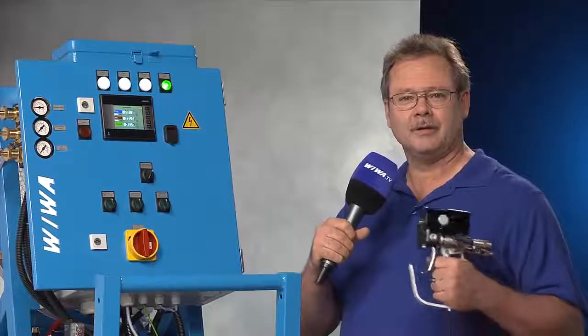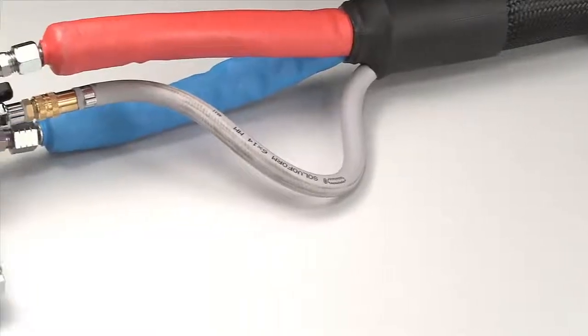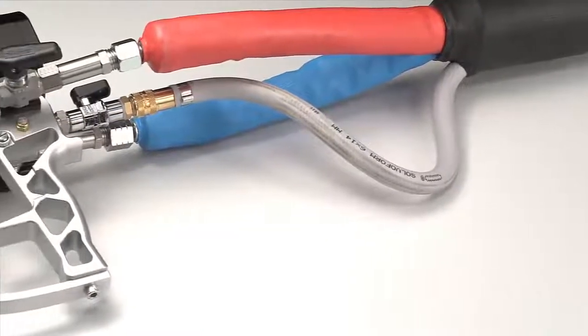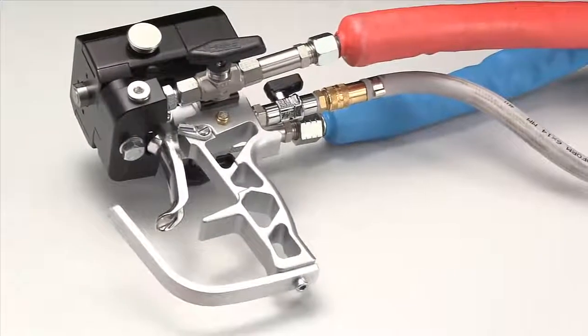Now connect the spray gun to the hose package like this. Connect the blue coated hose to the polyol side of the gun manifold and the red coated hose to the isocyanate side of the gun manifold.